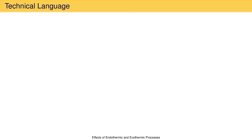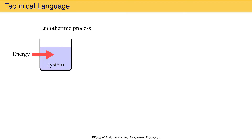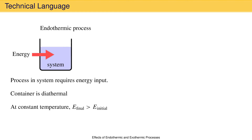That's a lot of words for describing something that's really quite simple. As you might expect, practicing chemists have a more compact way to express all of this. Let's look at this language for an endothermic process. As we know, an endothermic process is one that requires the input of energy. In this situation, a chemist would say two things to imply everything we have talked about. The chemist would say that the container is diathermal, and that at constant temperature, the final energy of the system is greater than the initial energy. The word diathermal is new — what does it mean for container walls to be diathermal? If container walls are diathermal, they allow energy to flow across them. It's sort of the opposite of insulating, although there is a technical word for that too that we won't talk about right now.